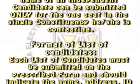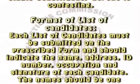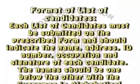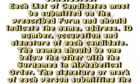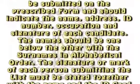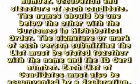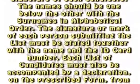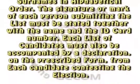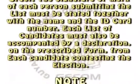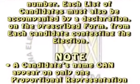Format of list of candidates: each list of candidates must be submitted on the prescribed form and should indicate the name, address, ID number, occupation, and signature of each candidate. The names should be listed one below the other with the surnames in alphabetical order. The signature or mark of each person submitting the list must be stated together with the name and ID card number.